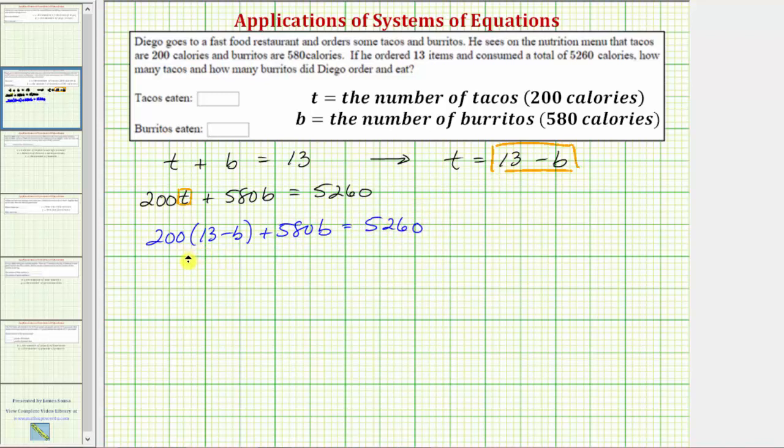Notice now we have an equation with just b in it and therefore we can now solve the equation for b. To solve for b, let's first clear the parentheses here by distributing. 200 times 13 is 2,600 minus 200 times b or minus 200b plus 580b equals 5,260. Combining like terms, negative 200b plus 580b is 380b, so we have 2,600 plus 380b equals 5,260.